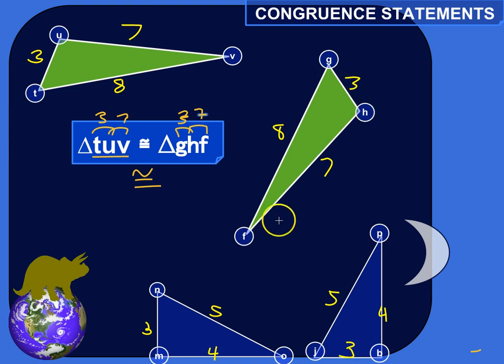And H to F is seven. And then it's just kind of assumed that you don't need to write down the third side, because if three corresponds to three and seven corresponds to seven, the remaining side here, eight, obviously corresponds to the remaining side over here, eight.